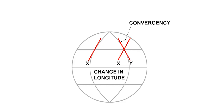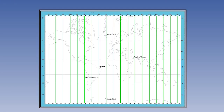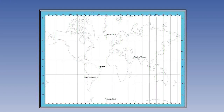We have already covered the concept of Earth Convergence, or Convergency, in a previous lesson. It is the angle of inclination of meridians on the Earth, or the change in direction of a great circle on the Earth. Chart Convergence is the angle of inclination of meridians on the chart, or the change in direction of a straight line on the chart.